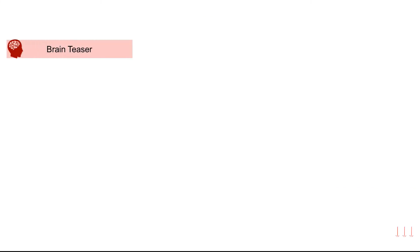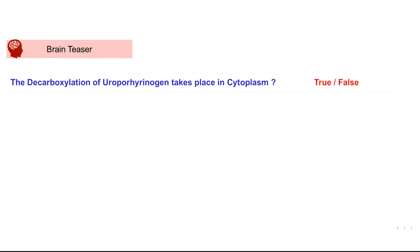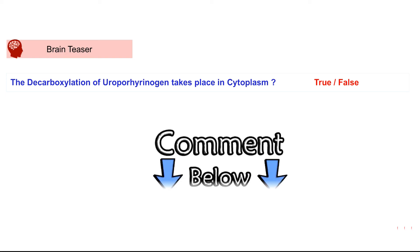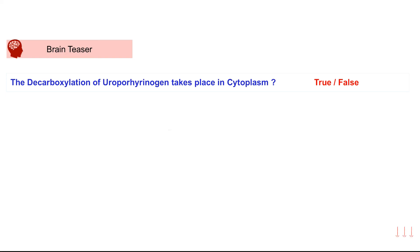The brain teaser question for today: the decarboxylation of uroporphyrinogen takes place in the cytoplasm — is this statement true or false? Write your answer in the comments below.